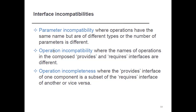The second incompatibility is operation incompatibility, where the names of operations in the composed provides and requires interfaces are different. This results in operation incompatibility when the names of your composed provides and required interfaces differ from each other.